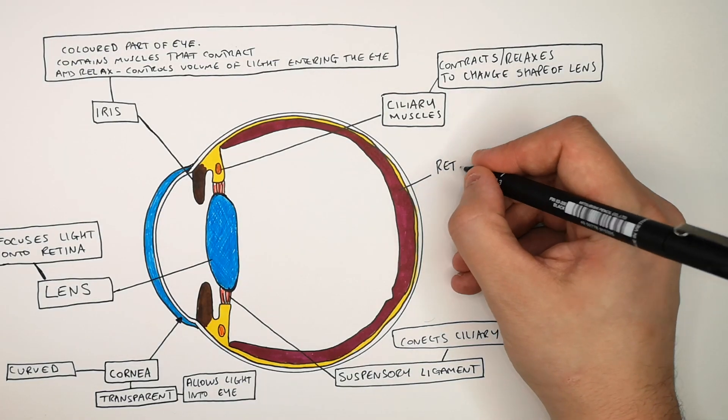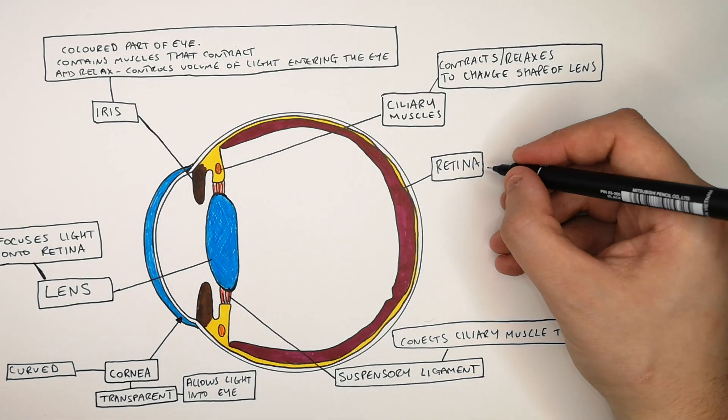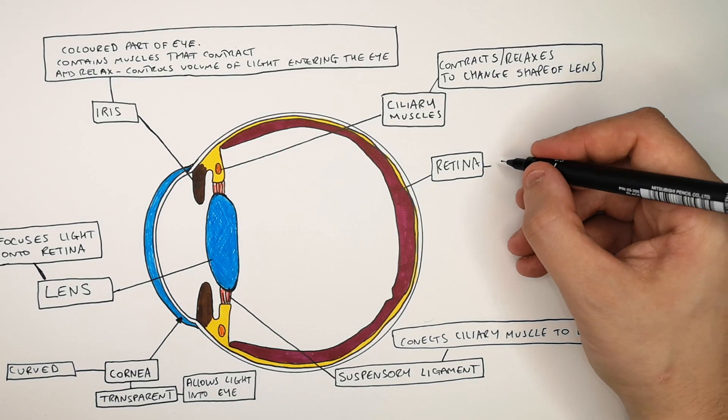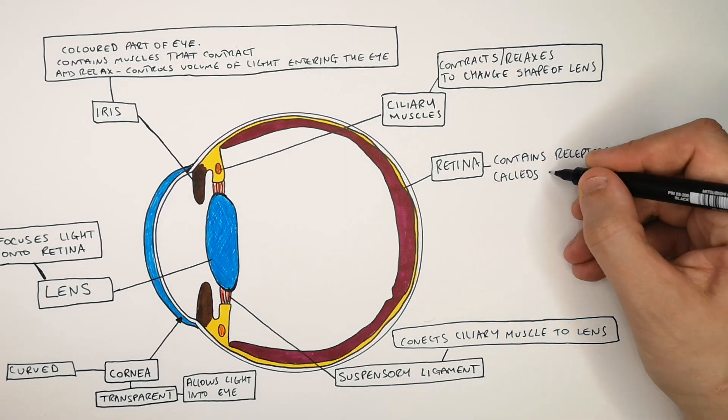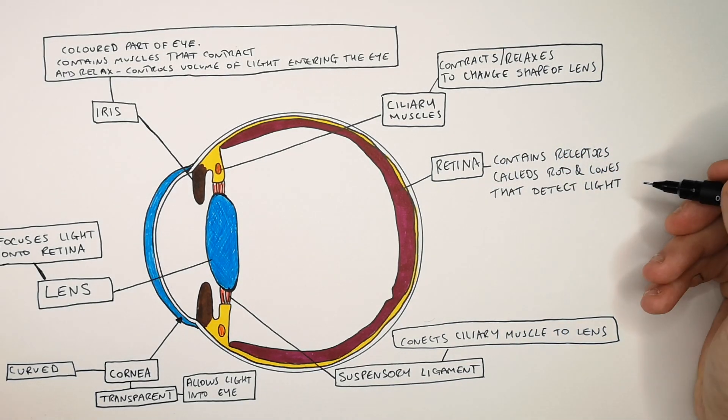This is the retina. The retina detects light. The retina contains receptors called rods and cones that detect light.